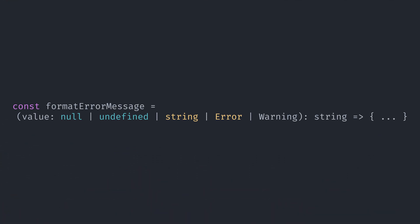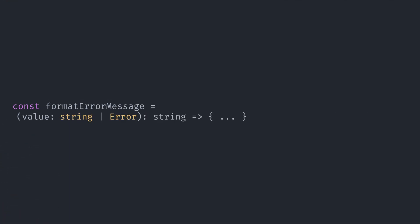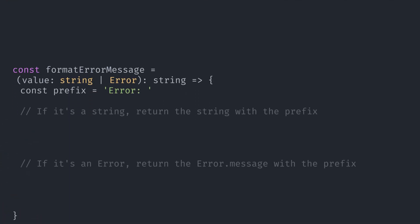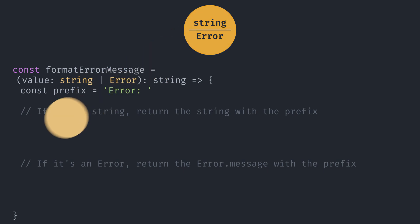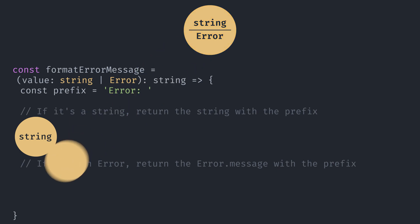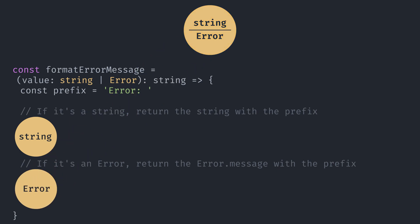We'll start by supporting only two types: string and error. To implement that function we need to narrow the string or error type to just a string and deal with it, then narrow to just an error and deal with it. The first type guard that we'll explore is the typeof operator. This operator allows us to check if a given value is a string, number, bigint, boolean, symbol, undefined, object, or a function.